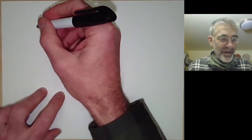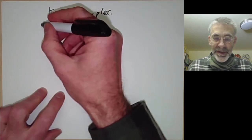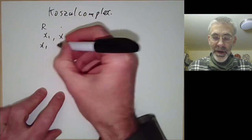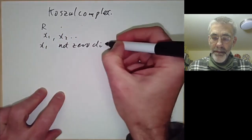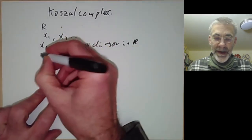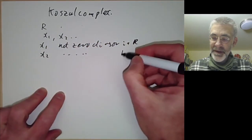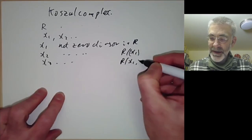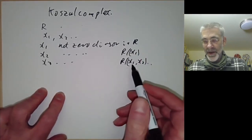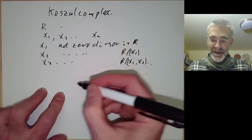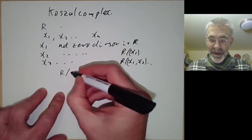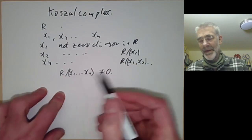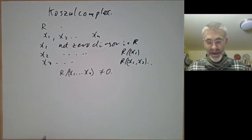We recall that if we've got a ring R, a regular sequence is a sequence of elements x1, x2, and so on, such that x1 is not a zero divisor in R, x2 is not a zero divisor in R over x1, x3 is not a zero divisor in R over x1, x2, and so on. One other condition is the non-triviality condition: R over x1 up to xn is not zero, because if you allow this to be zero there are lots of rather silly examples of regular sequences.